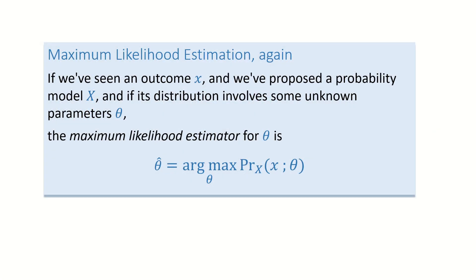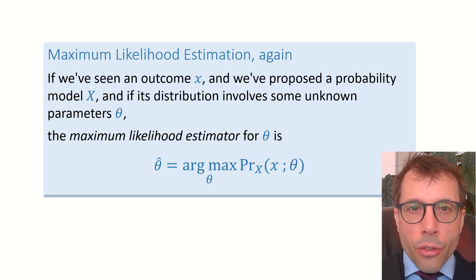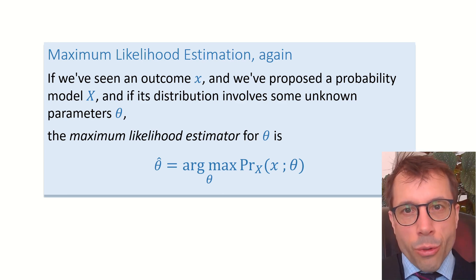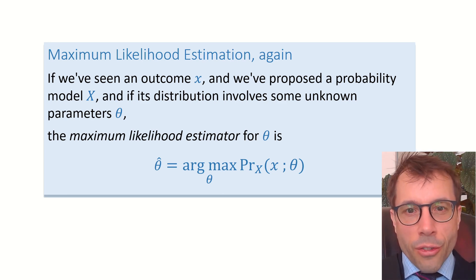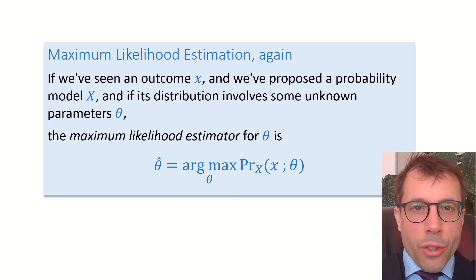Pause the video and have a read. This is just a restatement of what maximum likelihood estimation is, but this is a better way of writing it than what we had before, because this applies automatically to discrete random variables and continuous random variables. And it applies to individual observations and it applies to data sets of independent observations. And in fact, it applies to any other type of rich data set, even if the observations aren't independent.